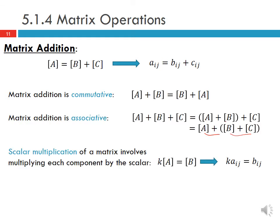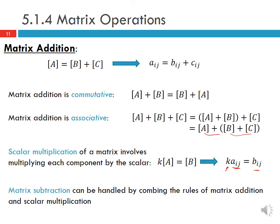Scalar multiplication of a matrix means multiplying each component by the scalar K, so K times A equals B means each element Aij is multiplied by K to give Bij. Matrix subtraction can be handled by combining these rules — setting K equal to negative 1 and applying scalar multiplication with addition gives subtraction.